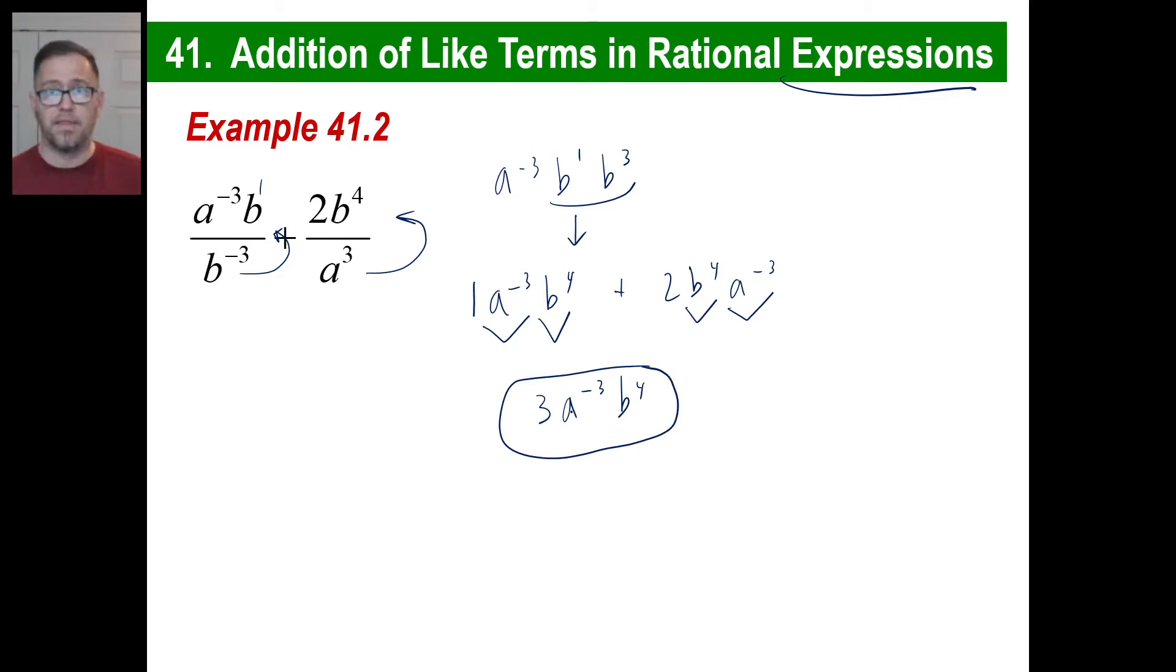Now, in the back of the book, their answer, you might look back there and they have this as an answer: 3B to the fourth over A to the third. If they do, fine. Who cares? That's the same thing. All they've done is take this and made it into an A to the positive third. So it doesn't matter. In fact, you might even get to a point where you go, well, I like to see all the exponents as positive values. It's just easier for my head. Does it intimidate me so much? Fine. Go right ahead and do that.